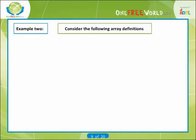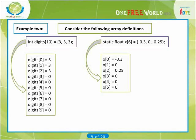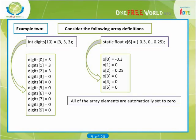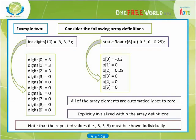Example 2. Consider the following array definitions: int digits[10] = {3, 3, 3}, static float x[6] = {-0.300, 0.25}. The results on an element-by-element basis are as follows. In each case, all of the array elements are automatically set to 0 except those that have been explicitly initialized within the array definitions. Note that repeated values, that is 3, 3, 3, must be shown individually. The array size need not be specified explicitly when initial values are included as part of an array definition. With a numerical array, the array size will automatically be set equal to the number of initial values included within the definition.